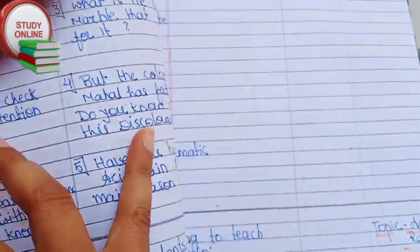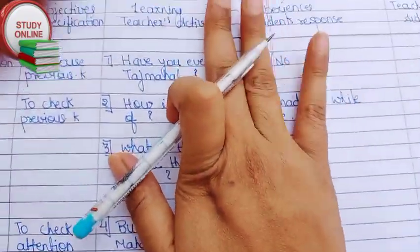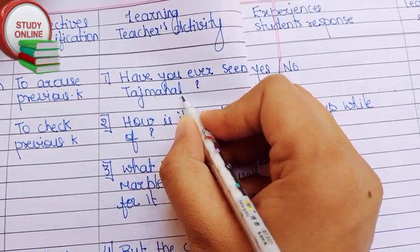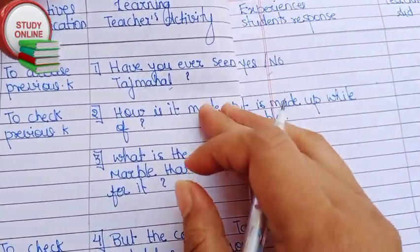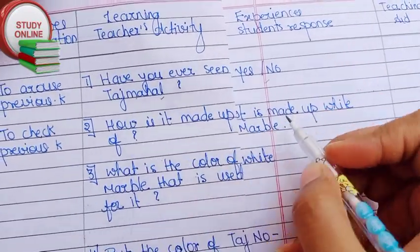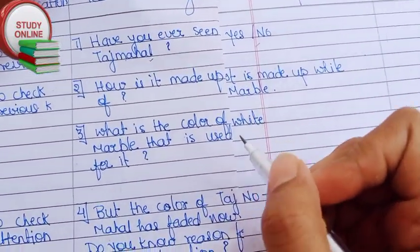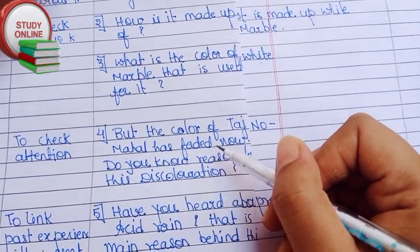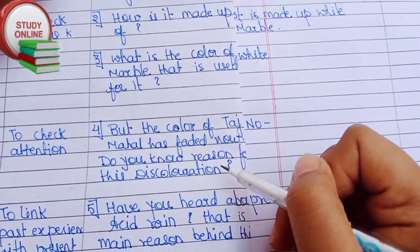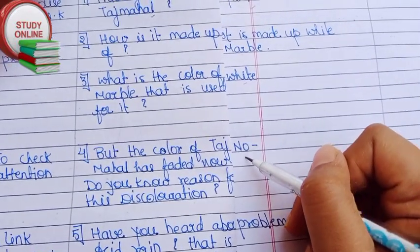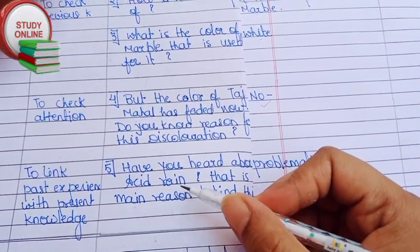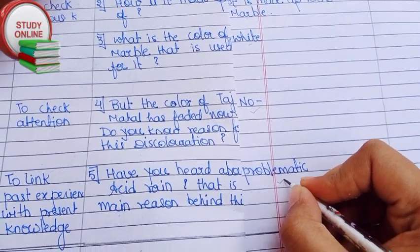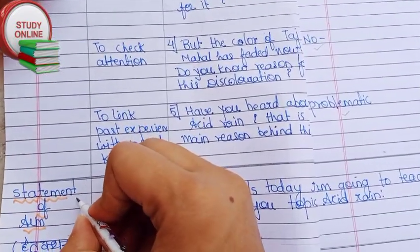For the teaching aid, the first question we have to ask would be: have you ever seen the Taj Mahal? Students will answer yes or no. Then: what is it made up of? They will answer marble. What is the color of marble? Students will answer white. But the color of the Taj Mahal has faded — do you know the reason for this discoloration? Students will say no. Then we ask: have you ever heard about acid rain? That is the main reason behind this.